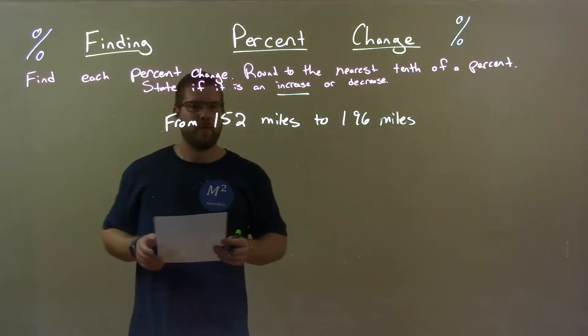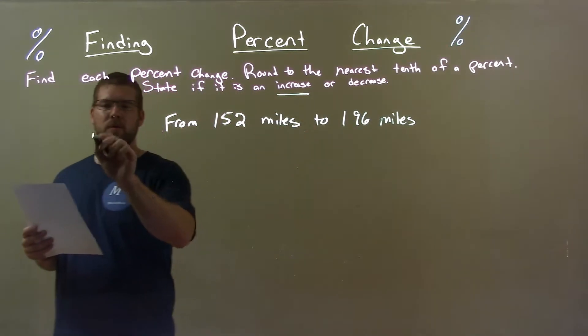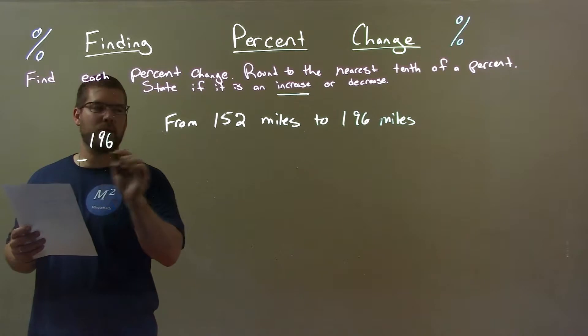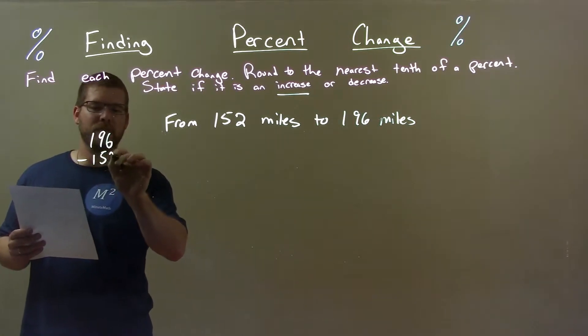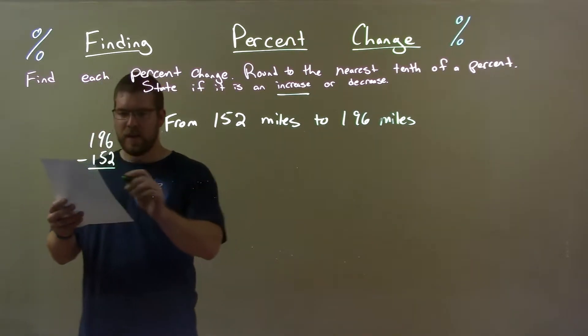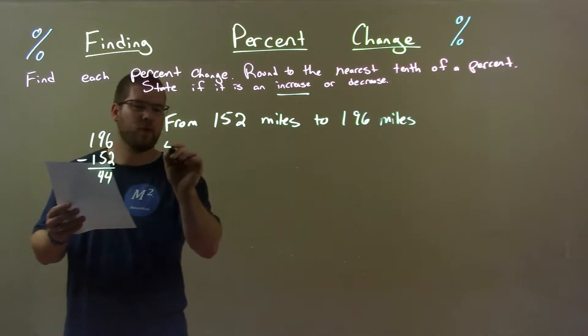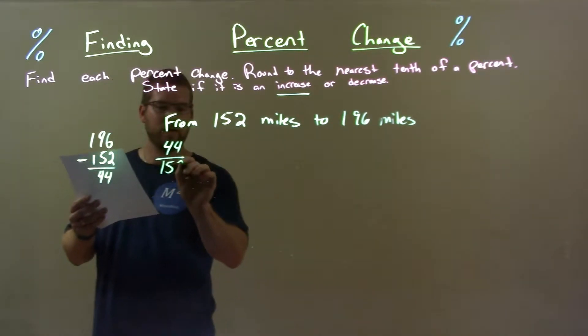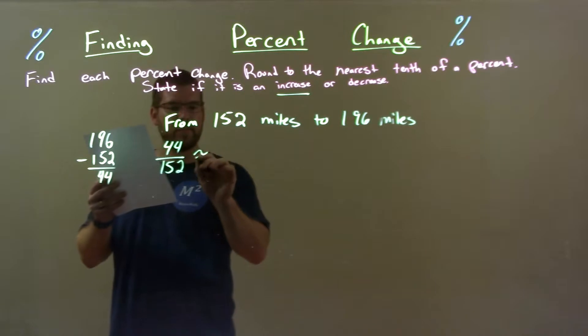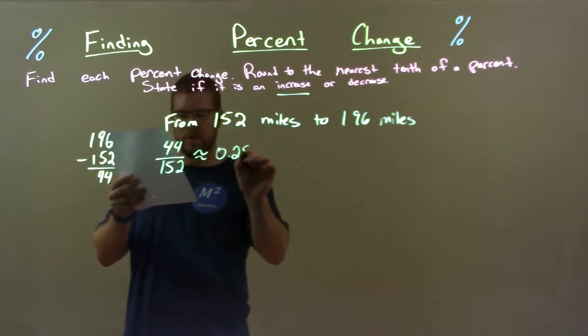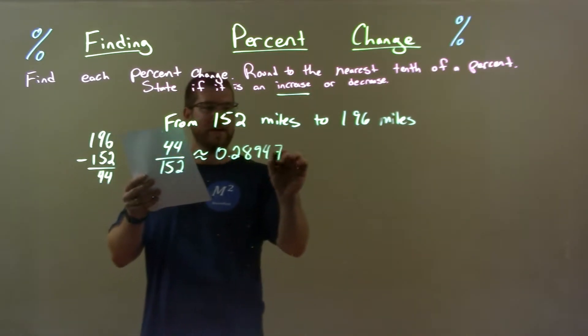Now we got to find the difference between the two. Larger number 196 subtracted by the smaller number 152. That gives us 44. We take that 44 and divide it by the first number 152. It gives us a decimal of 0.28947.